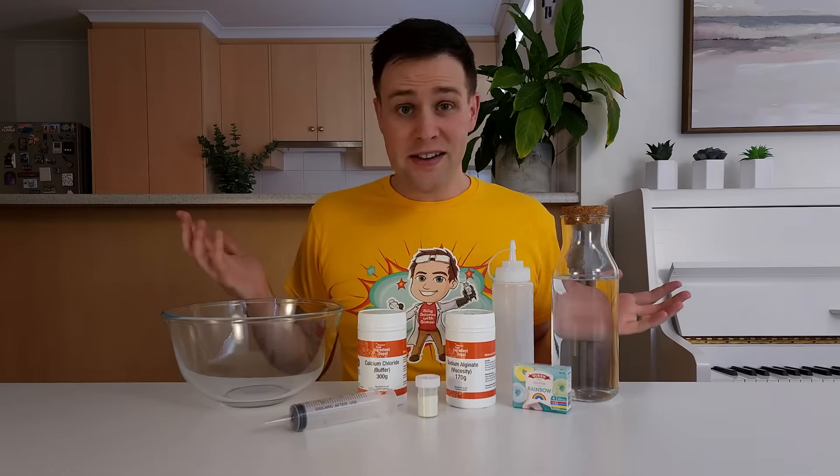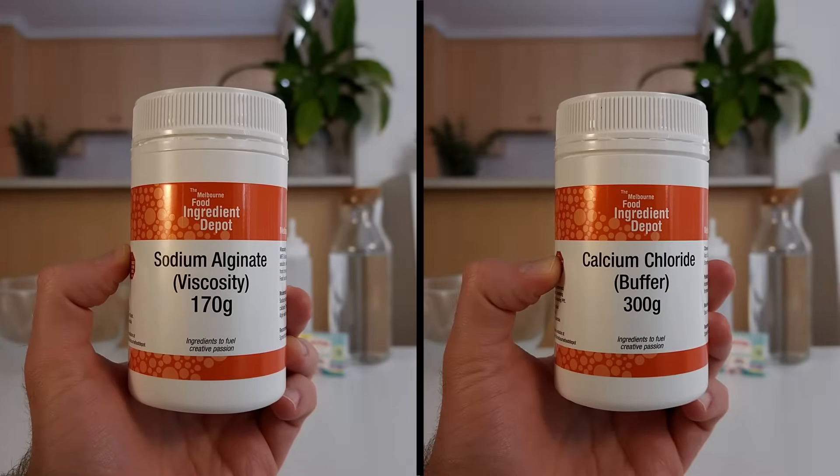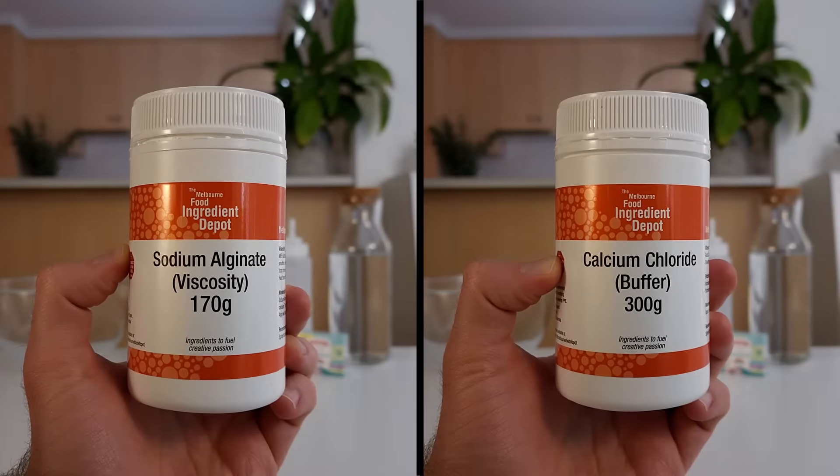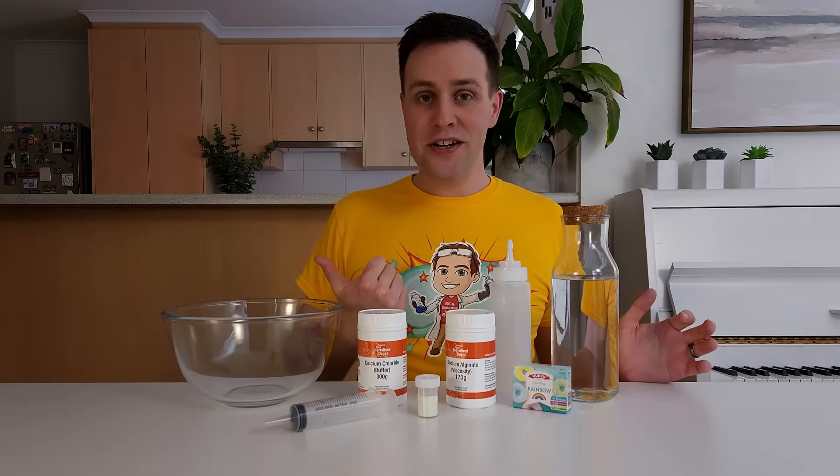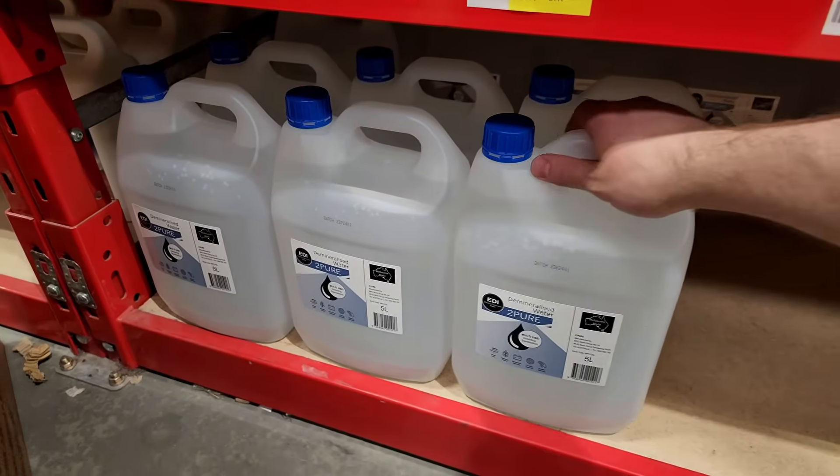The hardest part of this science activity is finding some of these items. Sodium alginate and calcium chloride can be bought online and in some stores that sell science equipment or specialist food ingredients. And instead of tap water, we'll be using either demineralised water or distilled water, which can be found in some hardware stores and some auto stores.